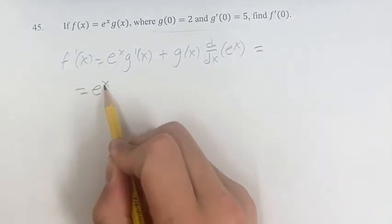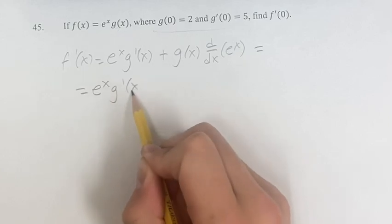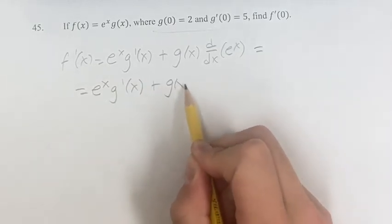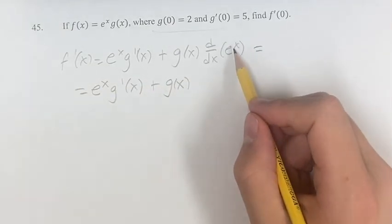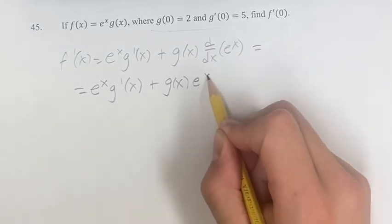Simplifying this, we have e to the x times g prime of x plus g of x, and then e to the x. Its derivative is just itself, so e to the x.